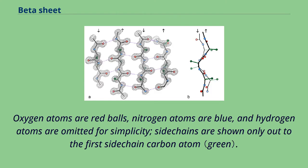Oxygen atoms are red balls, nitrogen atoms are blue, and hydrogen atoms are omitted for simplicity. Side chains are shown only out to the first sidechain carbon atom.